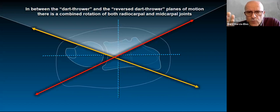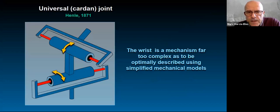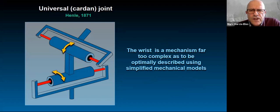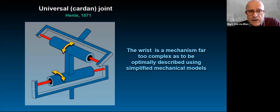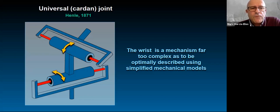Between the dart throwing rotation and reverse dart throwing, there is a combined rotation of both joints. This oblique axis framework makes it much easier to understand wrist motion compared to combining the two orthogonal axes together. However, this should not be taken for granted — the wrist is far too complex to be optimally described using simplified mechanical models. The universal joint or cardan-type joint described by Henley in 1871 is not perfect because it requires an interconnected rigid segment, and we know the proximal row is not rigid.